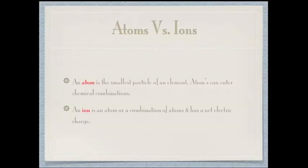Atoms versus ions: An atom is the smallest particle of an element and can enter chemical combinations. An ion is an atom or combination of atoms that has a net electric charge.